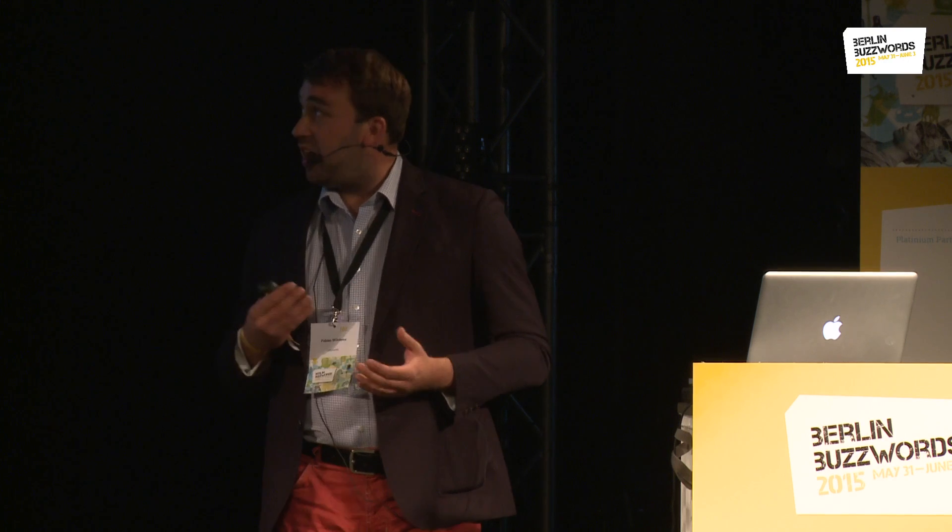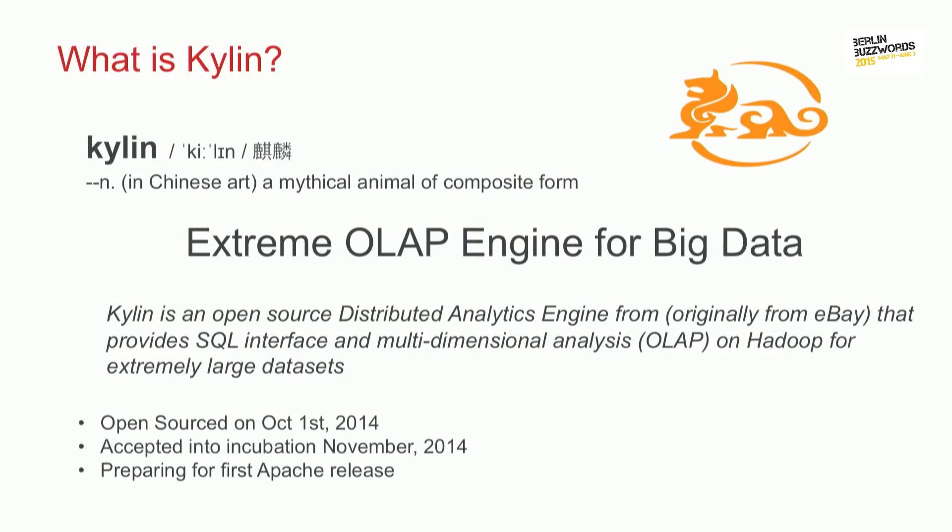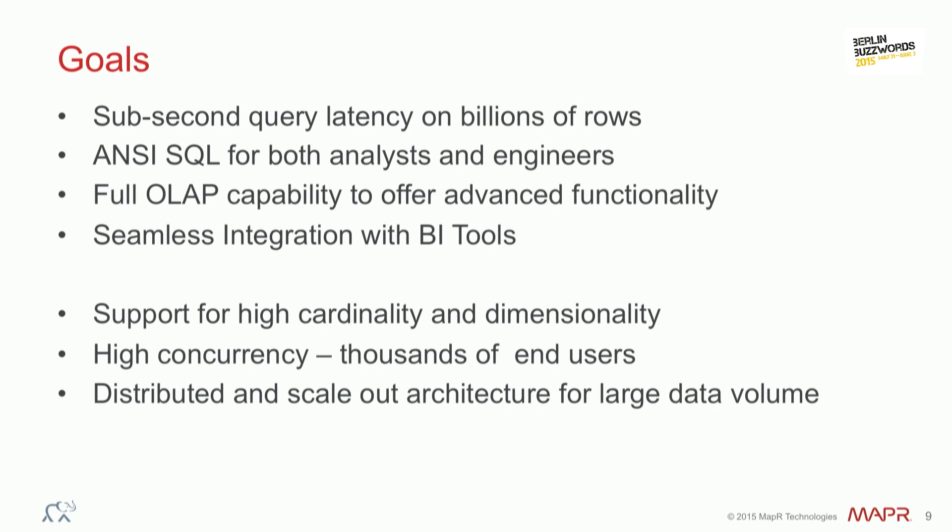Some folks at eBay started a project called Kylin, which is supposed to be the extreme OLAP engine for big data. Kylin is something of a mythical creature — a strange thing that was chosen as the project name. It got open-sourced late last year, it's currently incubating at Apache, and they are targeting an initial release fairly soon. The goals are really to provide sub-second queries on really large volumes of data — like billions and trillions of rows.